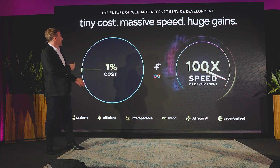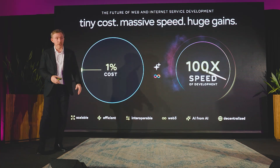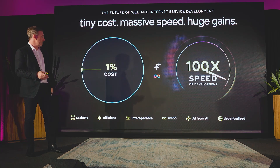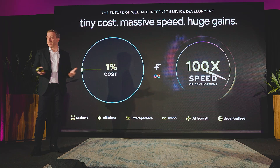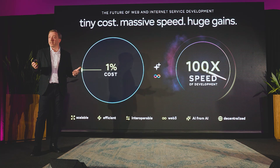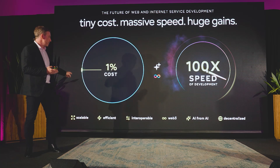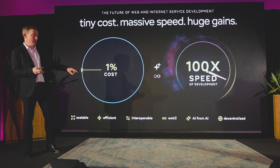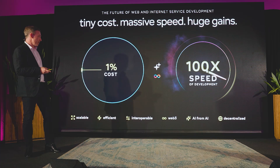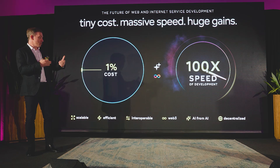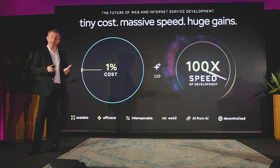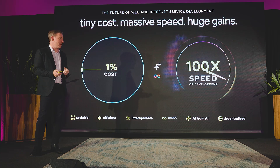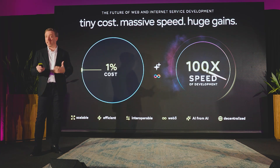So what does this mean in practice? Tiny costs, massive speed, huge gains. That demo at CFC was less than two minutes — the cost is probably less than 1% and the speed more than 100x. This platform can produce scalable, efficient, interoperable apps. These apps can also pack things like Web3 and AI functionality. They're decentralized. You're getting something that's sovereign.